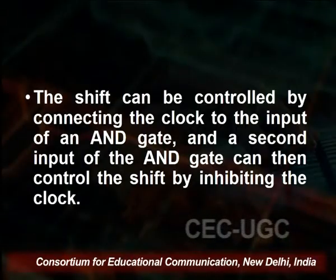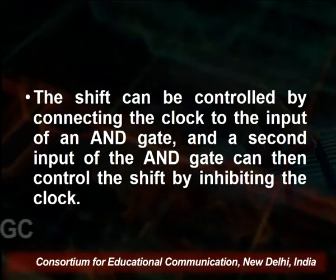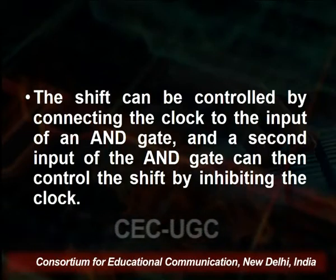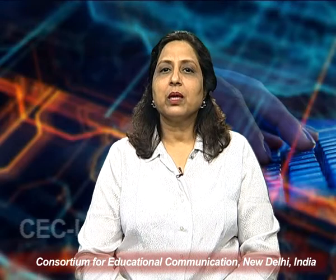Sometimes it is necessary to control the shift so that it occurs with certain clock pulses and not others. This is done by inhibiting the clock from the input of the register when we do not want a shift to happen. The shift can be controlled by connecting the clock to the input of an AND gate, where a second input of the AND gate controls the shift by inhibiting the clock. It is also possible to provide extra circuits to control the shift operation through the D inputs of the flip-flops rather than the clock input.